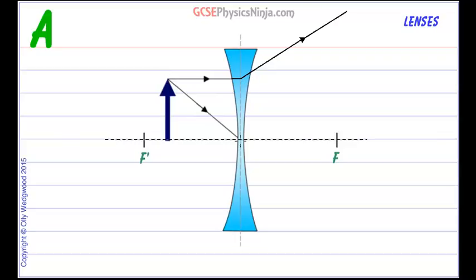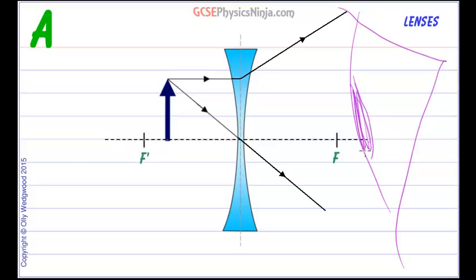The other ray, which goes through the optical center, will carry straight on in a straight line. So if I, with my eye, were to receive those light rays and my eye were to focus them onto my retina,